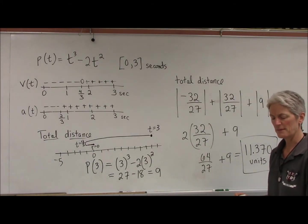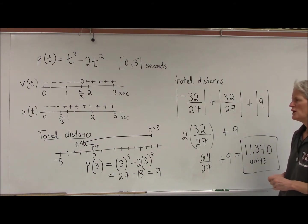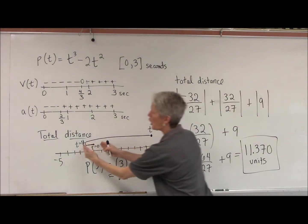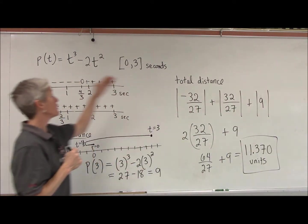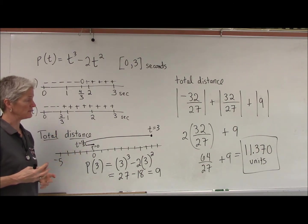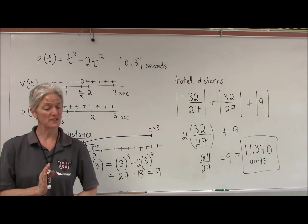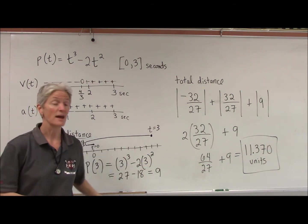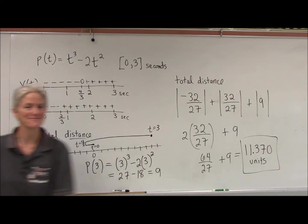So again, total distance is always positive. You have to find all the legs of your trip, figuring out where you moved left and right, where you stopped, where you turned direction. Total displacement is just the difference between your beginning spot and your end spot — that can be positive or negative. Hope that helped. Have fun, we'll see you next time.